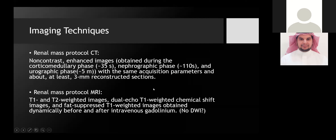For MRI, the protocol should include T1, T2, chemical shift, fat-suppressed T1, and pre- and post-contrast imaging. There was no mentioning of diffusion-weighted imaging; however, recent data has indicated it has some benefit in identifying malignant lesions.